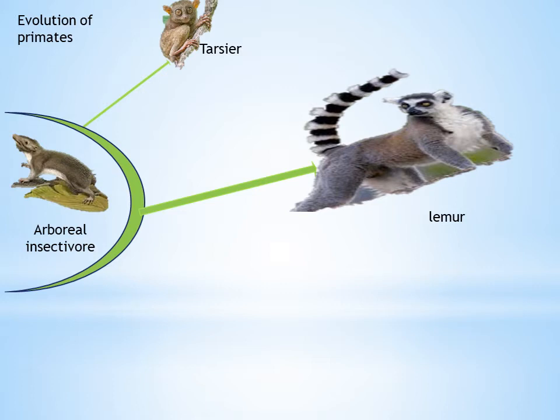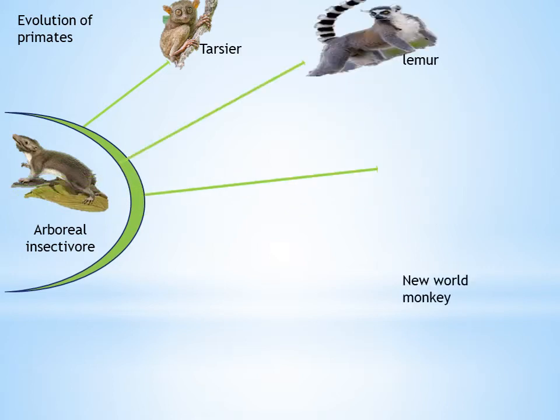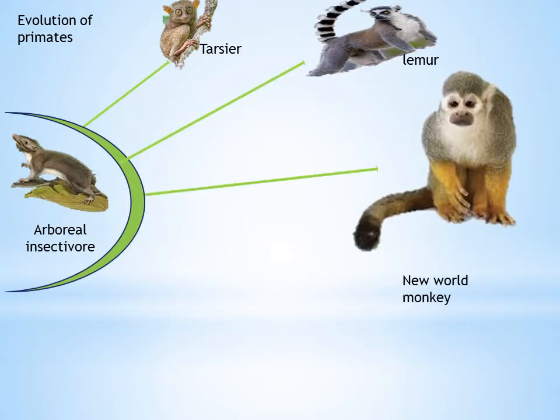Next is order Anthropodia. Anthropodia includes world monkeys. New world monkeys have flat noses with widely spread nostrils, a long prehensile tail, primitive dentition with 36 teeth, and are found in South and Central America. Examples are the squirrel monkey and spider monkey.